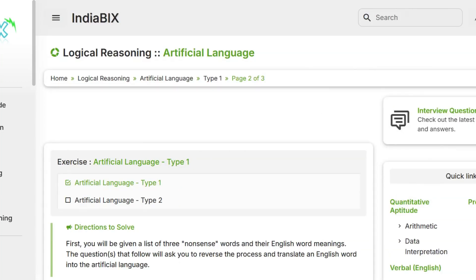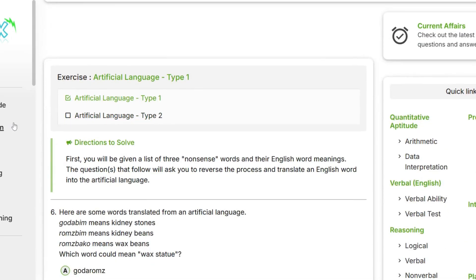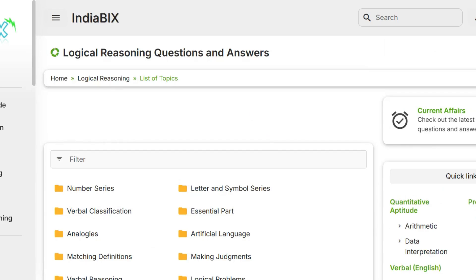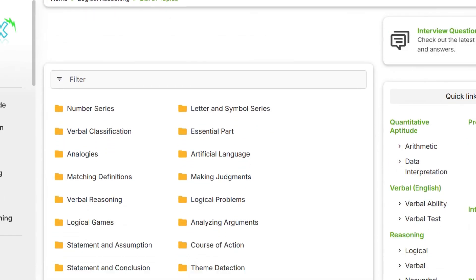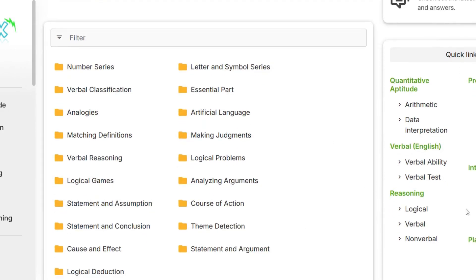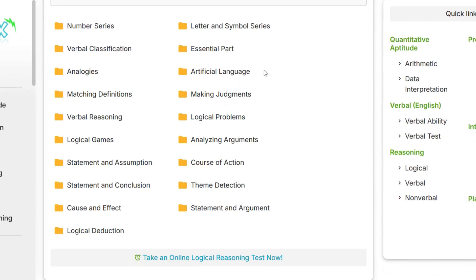Here's the first resource I'm sharing: IndiaBix.com. I'll share the link for this website in the description box. With this website, you can click on the logical reasoning category and you'll see all the verbal reasoning type questions that will come on the examination—artificial language, essential part, analogies, classification, letter and symbol sequences, and others too.